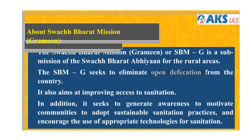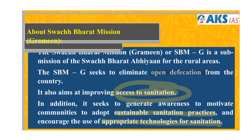The main aim of the second phase is to improve access to sanitation — the government has been giving money and asking people to build toilets. Now, in addition to providing access to sanitation, they want to generate awareness to motivate communities to adopt sustainable sanitation practices and encourage the use of appropriate technologies for sanitation. Research has shown that although many people received money under the Swachh Bharat Mission and constructed toilets, they were not using them for the intended purpose but converting them into storerooms. Phase 2 aims to bring about awareness among the people.